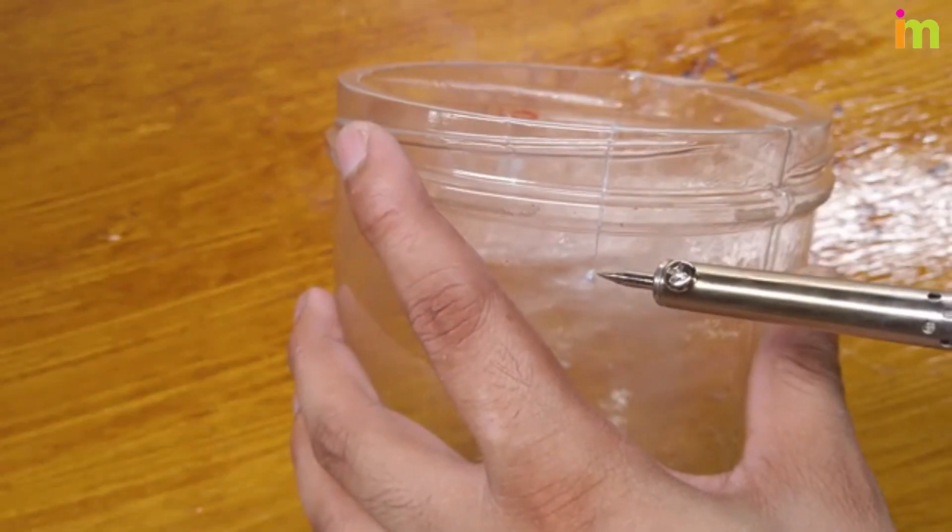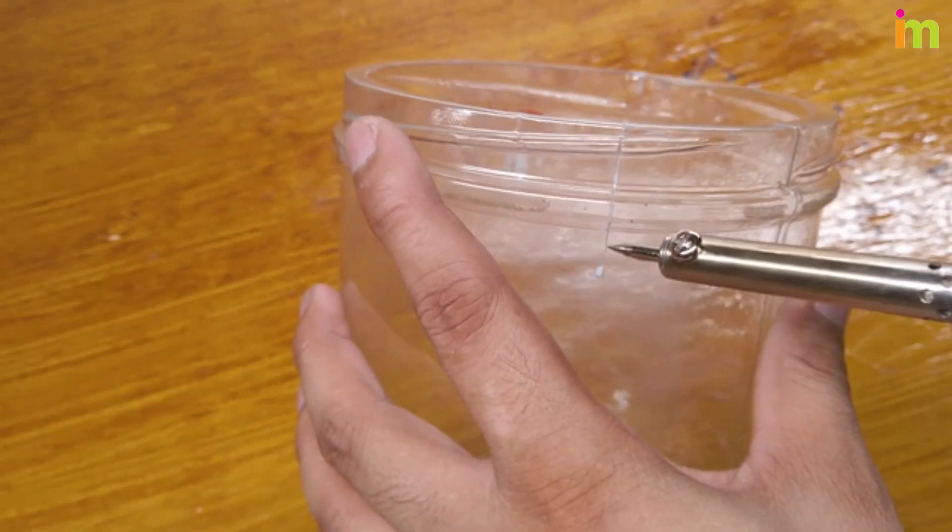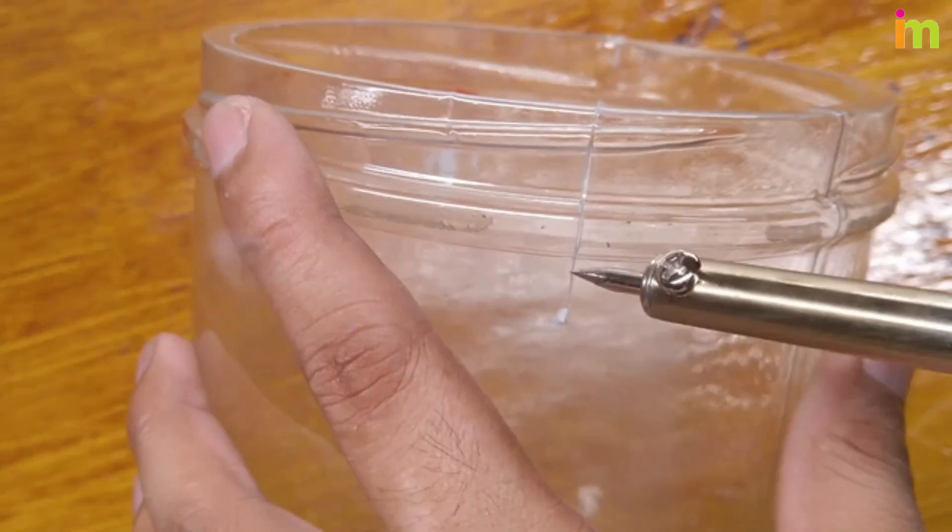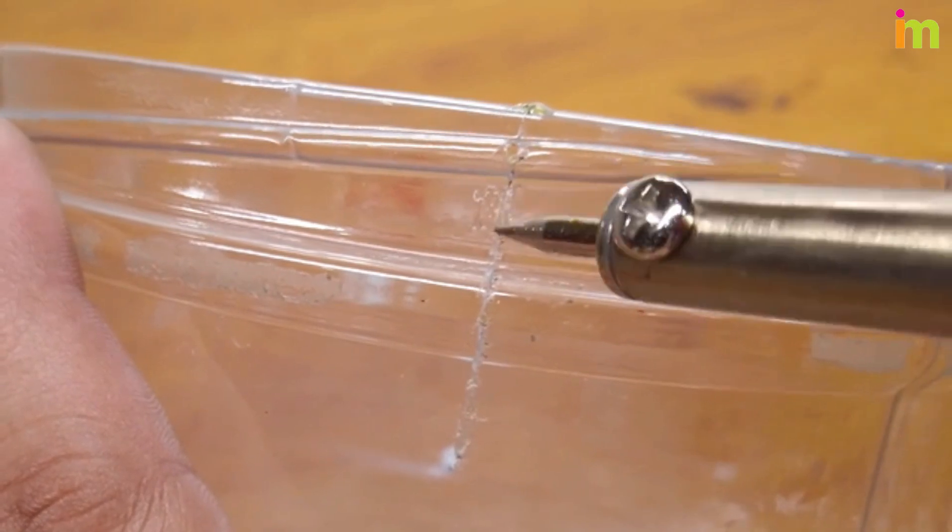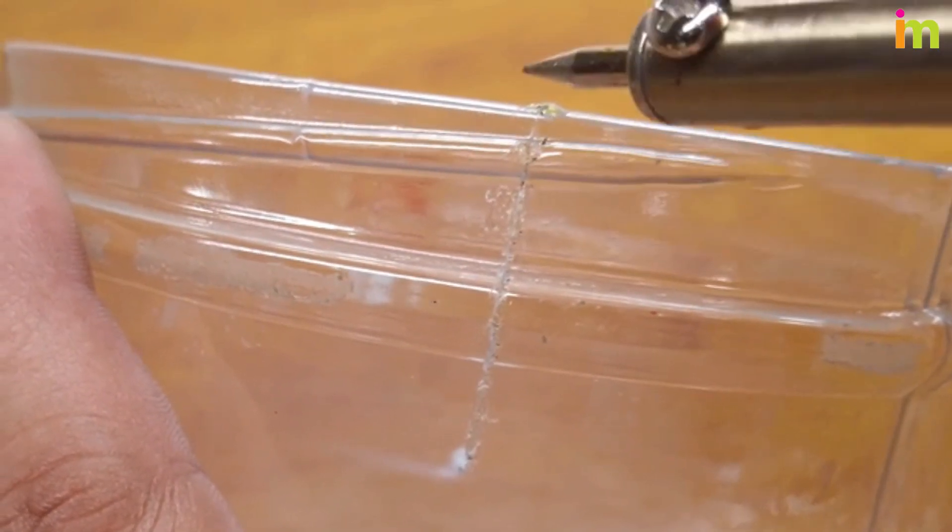Melt the edges of the crack with the soldering iron. Allow the plastic to cool completely. Wait at least one hour before using the repaired plastic.